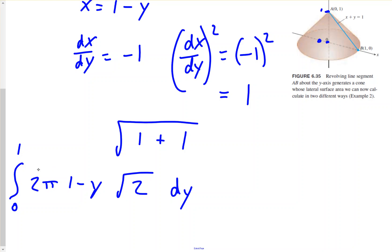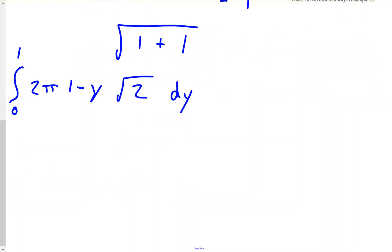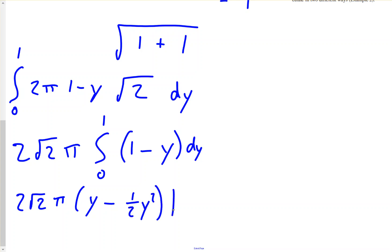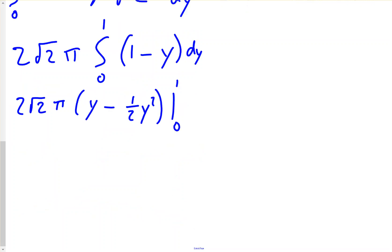Pulling out the constants — √2, 2, and π — gives a coefficient of 2√2π outside the integral: 2√2π ∫ from 0 to 1 of (1 − y) dy.